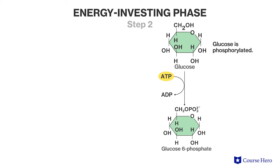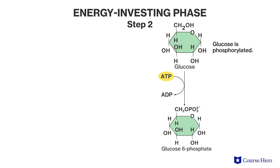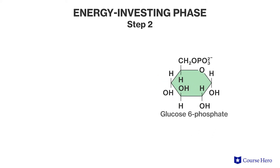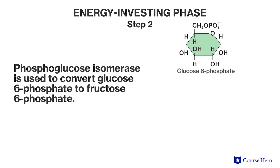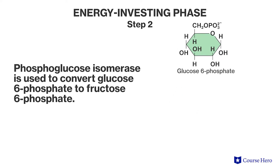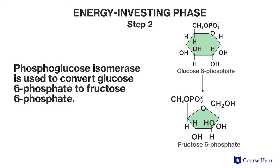Step two: the enzyme phosphoglucose isomerase is used to convert glucose 6-phosphate to fructose 6-phosphate.